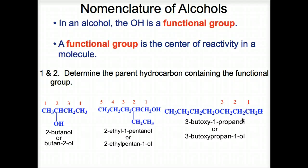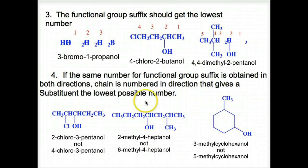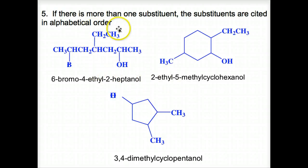In an alcohol, the OH is a functional group — the center of reactivity in a molecule, as we'll see when we get into reactions. To summarize the rules: determine the parent hydrocarbon containing the functional group; the functional group suffix gets the lowest number; if the same number is obtained in both directions, number in the direction that gives substituents the lowest possible number; if there is more than one substituent, cite them in alphabetical order. That concludes our discussion.